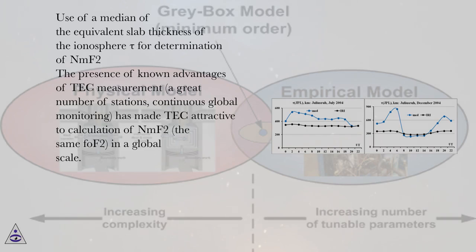Use of a Median of the Equivalent Slab Thickness of the Ionosphere Tau for Determination of NMF2. The presence of known advantages of TEC measurement, a great number of stations, continuous global monitoring, has made TEC attractive to calculation of NMF2, the same FOF2, in a global scale.